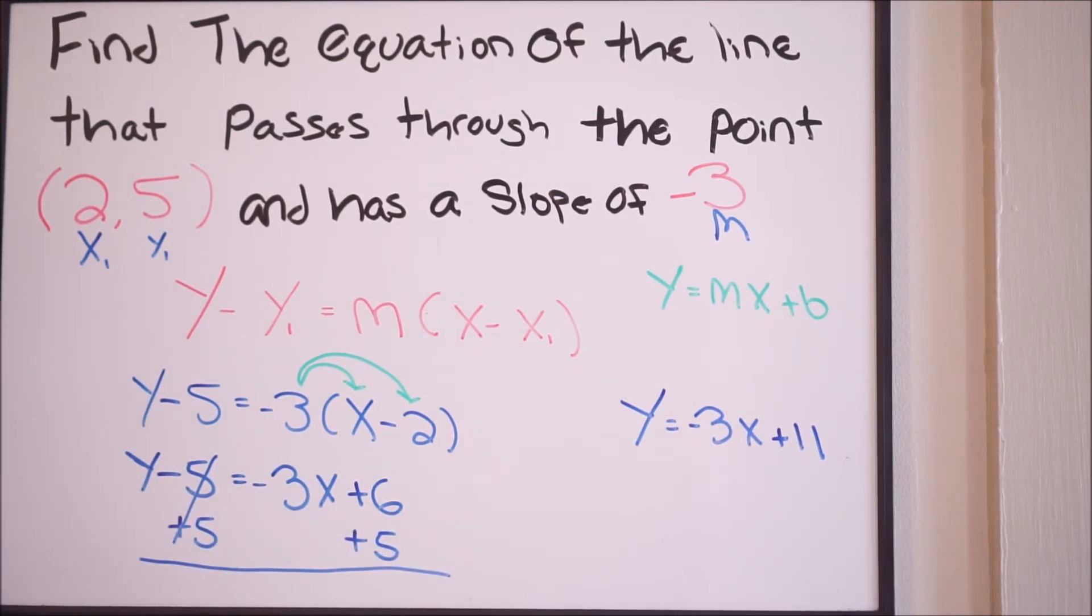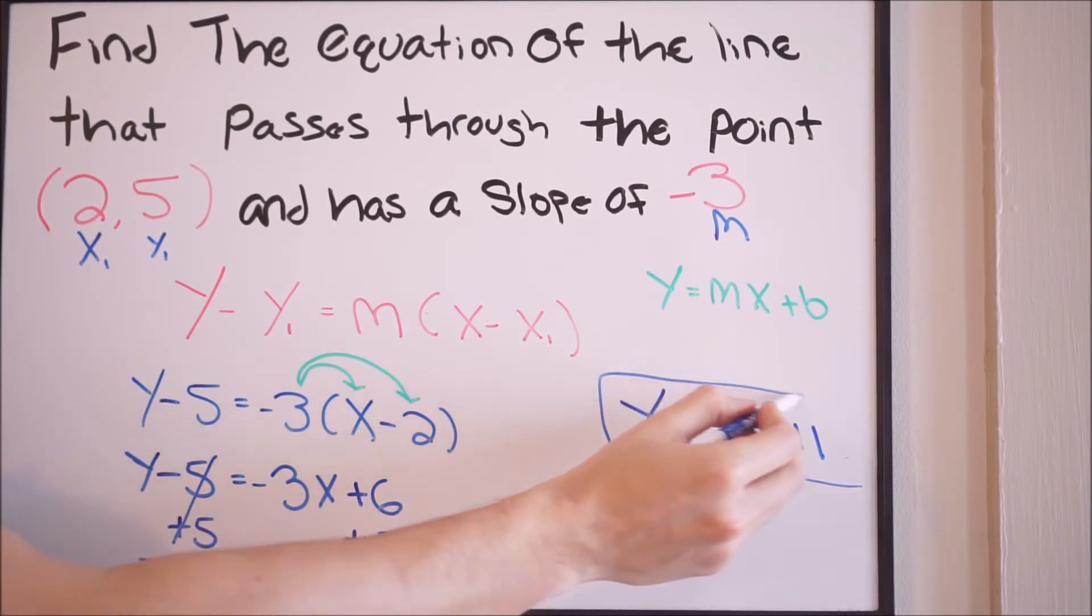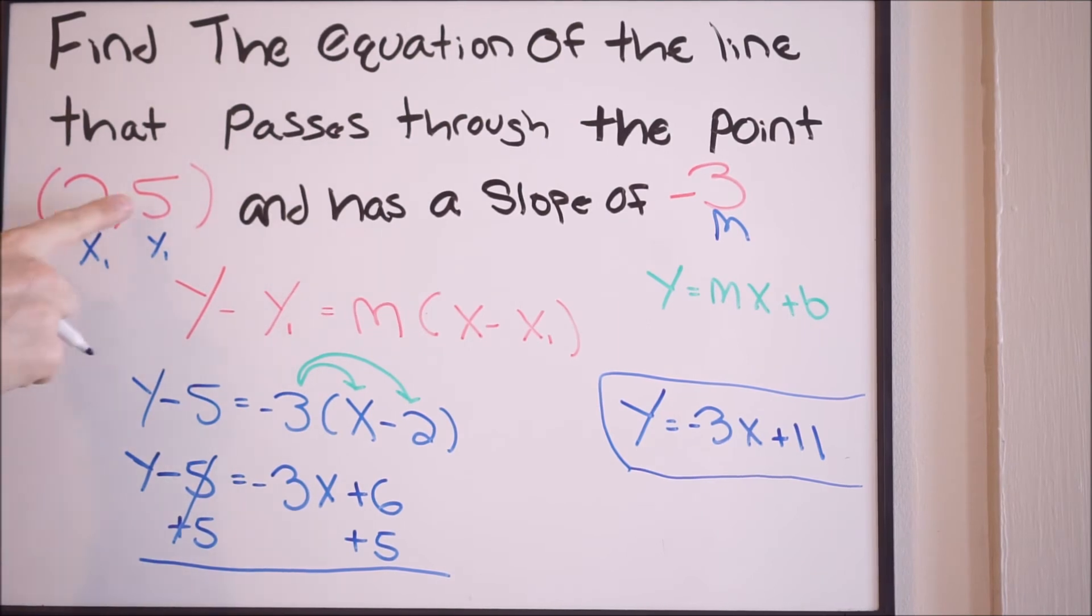And this here is going to be our final answer. So that is the equation of the line that passes through the point (2,5) and has a slope of negative 3. That was the first way in which you could solve this problem, using point-slope form.